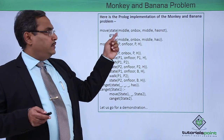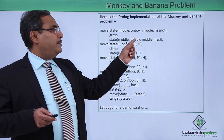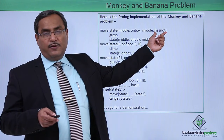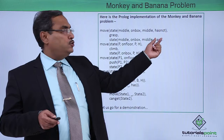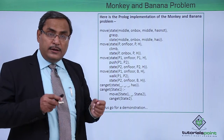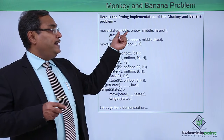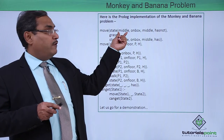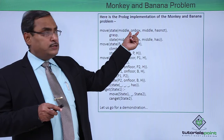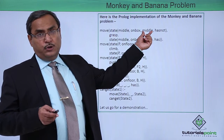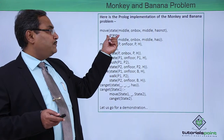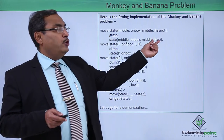After the grasp action, the horizontal position remains the same, the vertical position remains the same, the box position also remains the same, but the banana-status changes from 'has not' to 'has' because of the grasp. So: monkey horizontally at the middle of the room, vertically on the box, box at the middle of the room — initial state was 'has not', and after the grasp operation it will become 'has'.